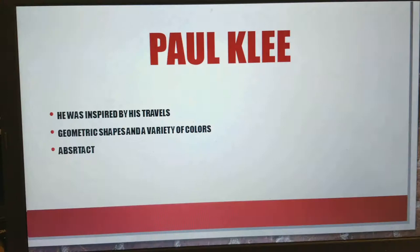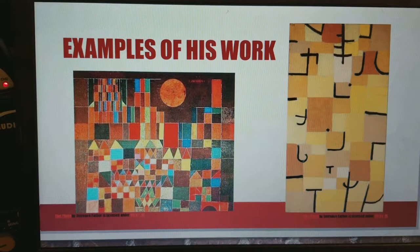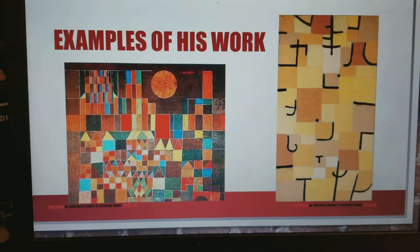Our next artist is Paul Klee. Paul Klee was inspired by his travels. He uses geometric shapes and colors, creating an almost abstract-looking style. One piece features geometric shapes arranged into what appears to be a cityscape. Another piece also shows geometric shapes and different colors, though it's harder to identify.